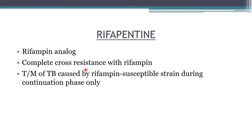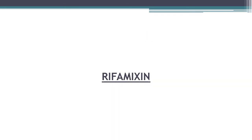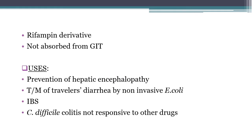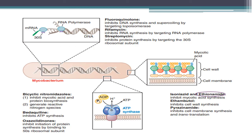Rifapentine is a rifampin analog with complete cross-resistance with rifampin; it is used for tuberculosis caused by rifampin-susceptible strains during the continuation phase only. Rifaximin is another rifamycin derivative but has no anti-mycobacterial activity. It is not absorbed from the GI tract and is used for prevention of hepatic encephalopathy, treatment of traveler's diarrhea caused by non-invasive E. coli, and — as off-label uses — irritable bowel syndrome and Clostridioides difficile colitis not responsive to other drugs.